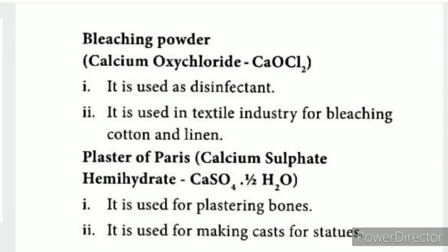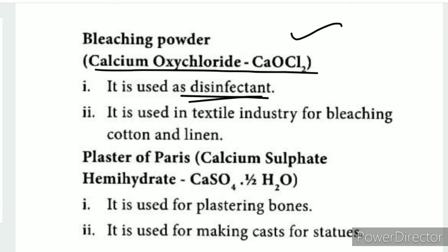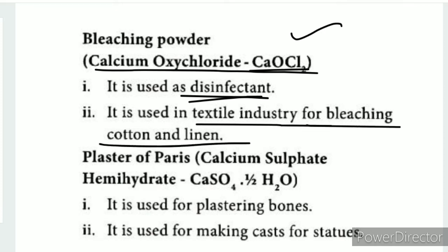Bleaching powder is an important one-word question answer. It is a disinfectant used to kill infection. It is also used as a dead-tall disinfectant. Its chemical name is Calcium Oxychloride and its formula is CaOCl₂. It is used in the textile industry to bleach cotton and linen.